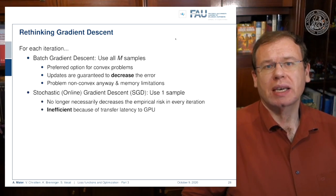This is why people prefer other approaches like stochastic gradient descent. Here they use just one sample and then immediately update, so this is no longer necessarily decreasing the empirical risk in every iteration and it may also be very inefficient because of the latency transfers to the GPU.